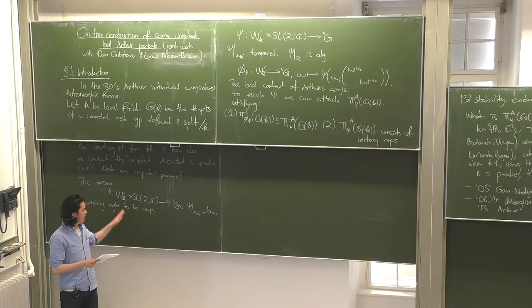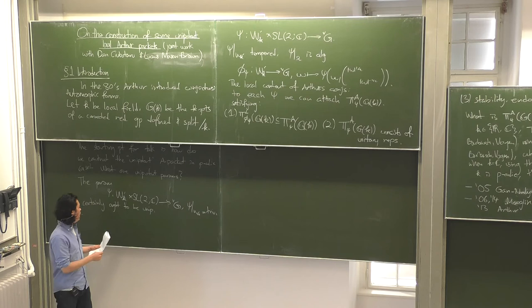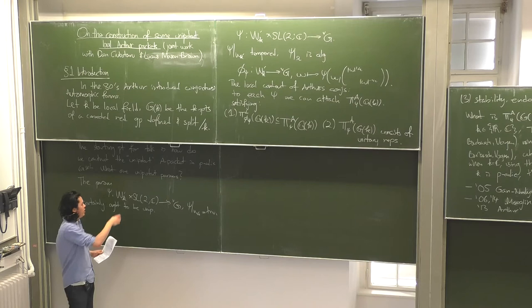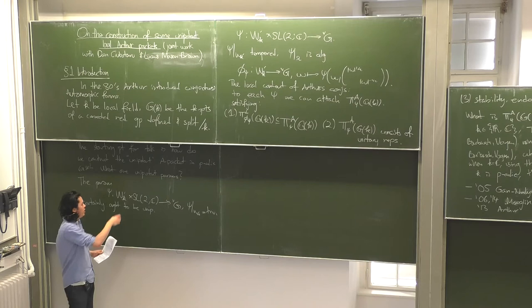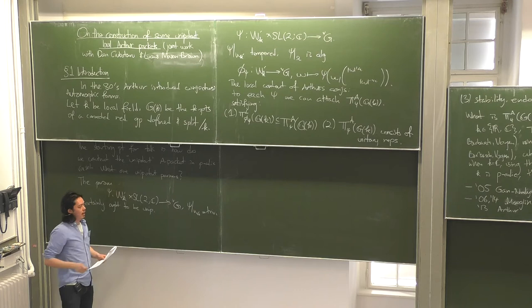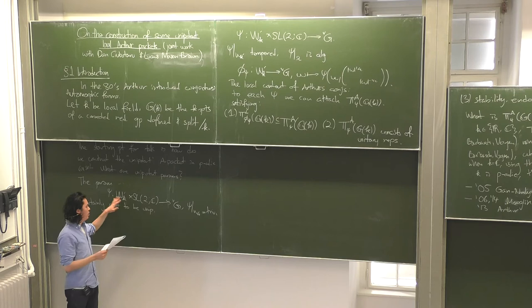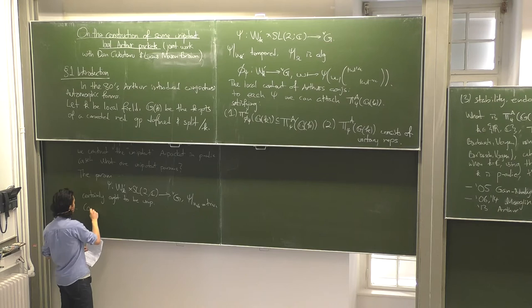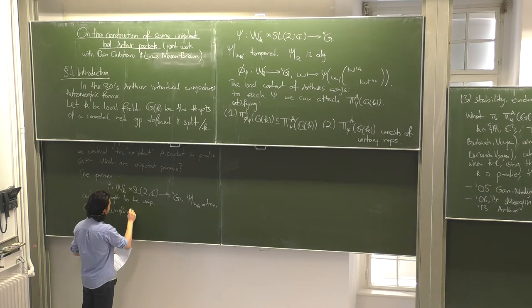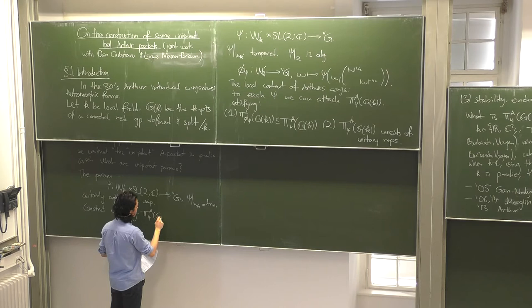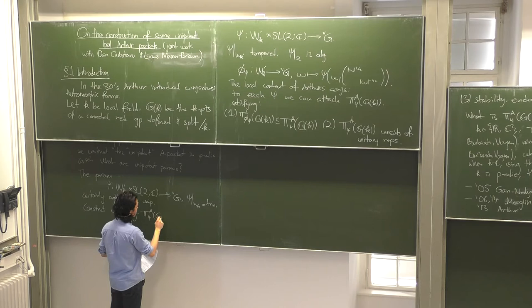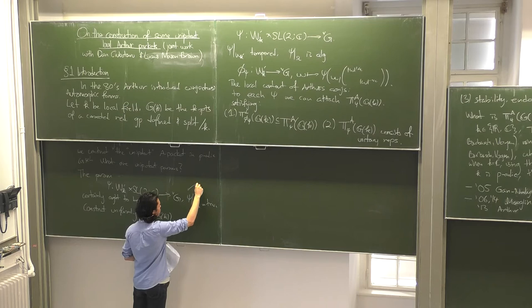In the complex case, these are exactly the unipotent parameters considered in Barbasch and Vogan's 1985 paper. In the real case, a Z/2 factor came up in Jeffrey Adams' talk when you look at the unipotent parameters. In the p-adic case, we still don't quite know the answer for what all the unipotent parameters are, though we certainly know that this one should be one. The content of this talk is: we'll construct uniformly, in the split case, the Arthur packets attached to these particular parameters, which we call anti-tempered parameters.